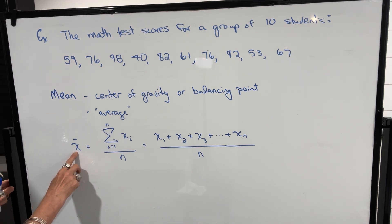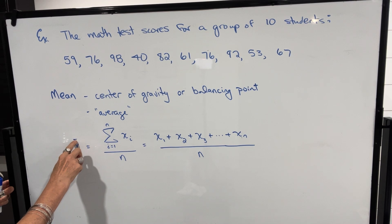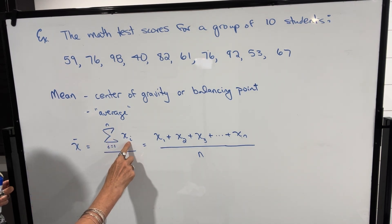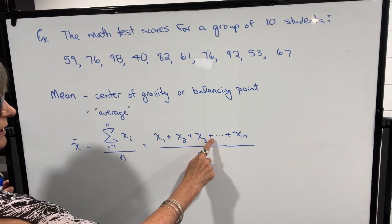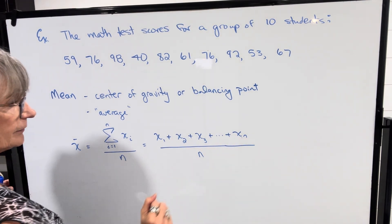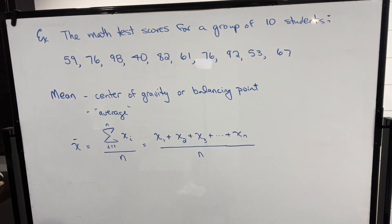The way that we calculate it, first of all, this is the notation for mean, the x with a bar above it, and it's going to be the sum of all the x values divided by the total number of x values. In other words, it's going to be x1 plus x2 plus x3 and so on up to xn divided by n.